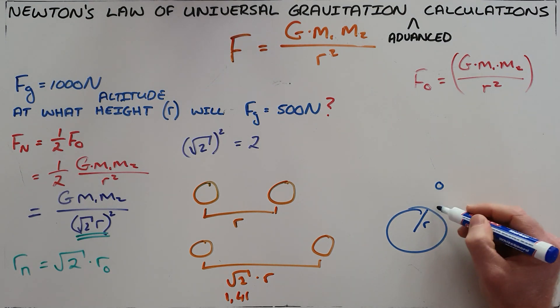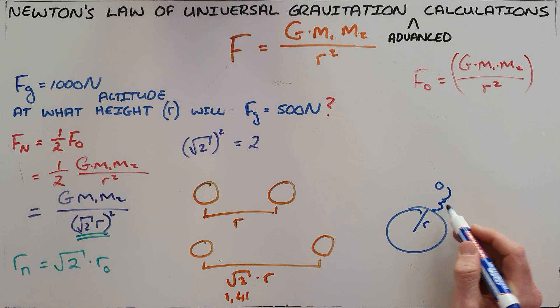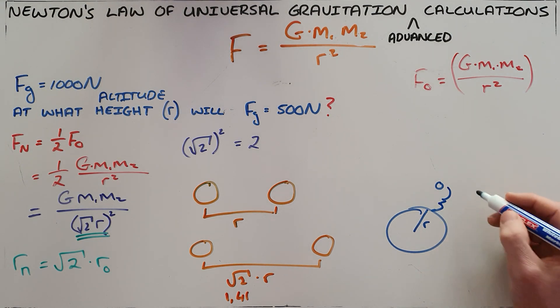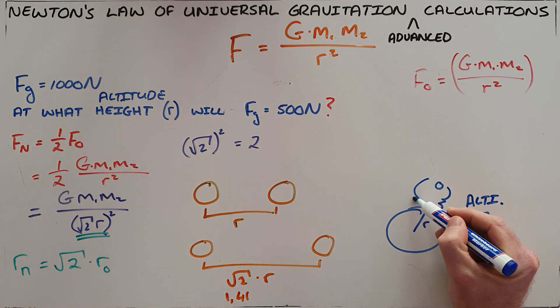So when we are asked for the altitude, we are only being asked for distance from the surface of the earth. And so we can then say that our altitude must be equal to the entire distance that we have just calculated.